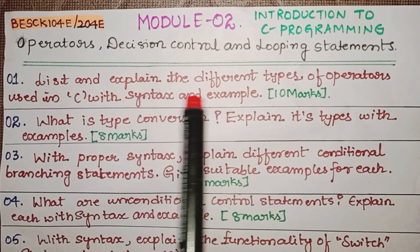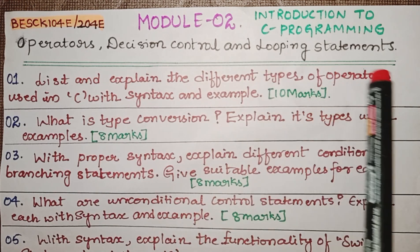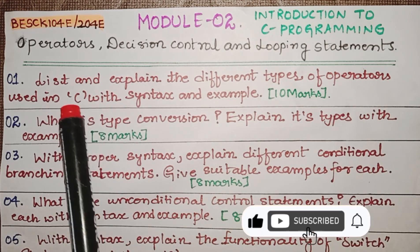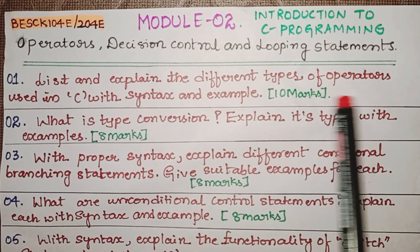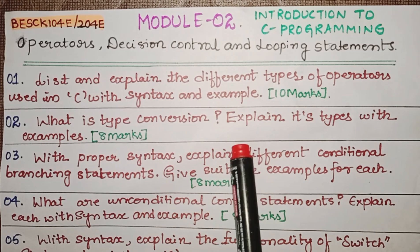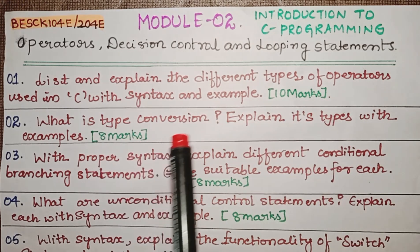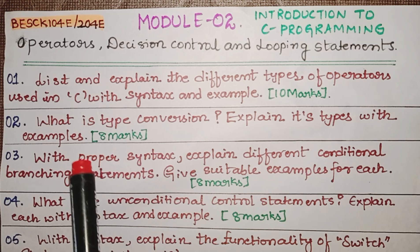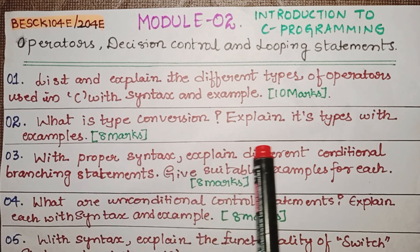The second module is Operators, Decision Control, and Looping Statements. The first question is: list and explain the different types of operators used in C with syntax and example. You should explain the different types of operators with suitable syntax and example, and this is for 10 marks. The next question is: what is type conversion, explain its types with example.